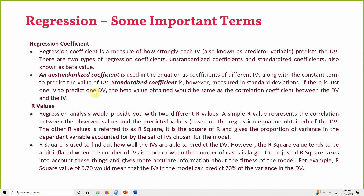If there is just one IV to predict one DV, the beta obtained would be the same as the correlation between the DV and the IV. Regression analysis will also provide you with an R value — a simple R value that represents the correlation between observed values and the predicted values, based on the regression equation.